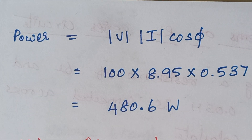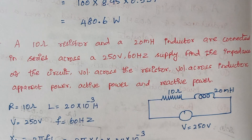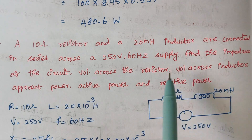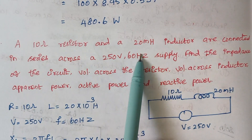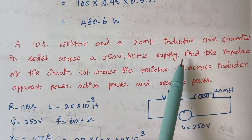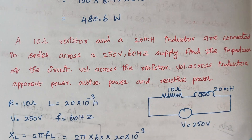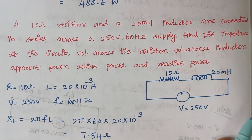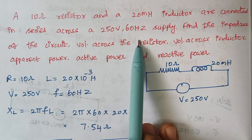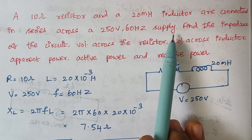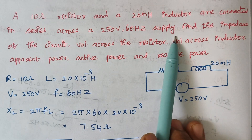So the first problem is over. We will proceed with the second one. The second problem is: a 10 ohm resistor and a 20 millihenry inductor are connected in series across a 250 volt 60 hertz supply.